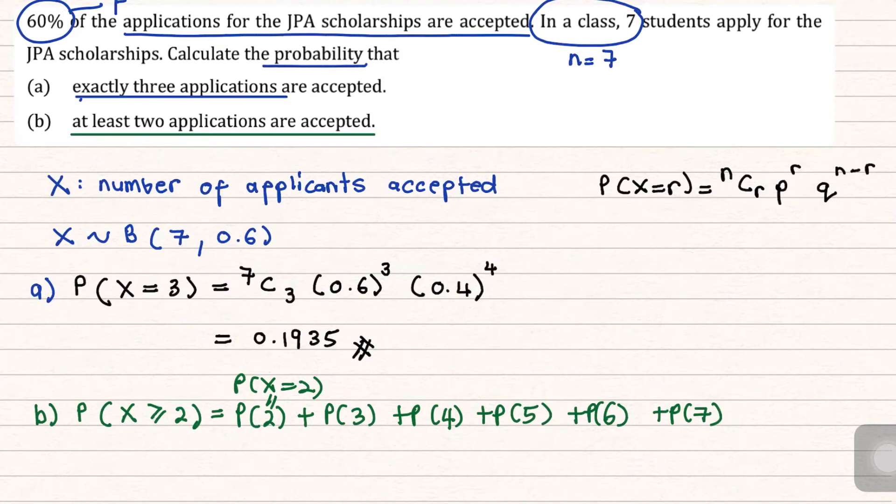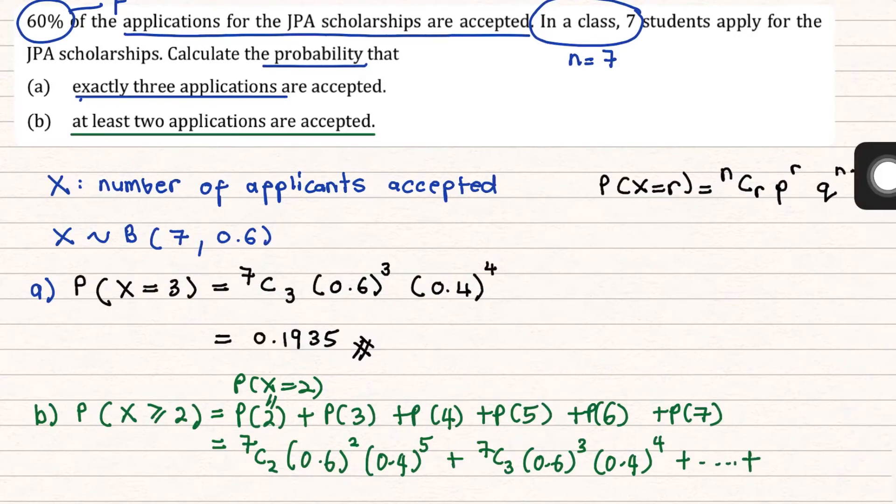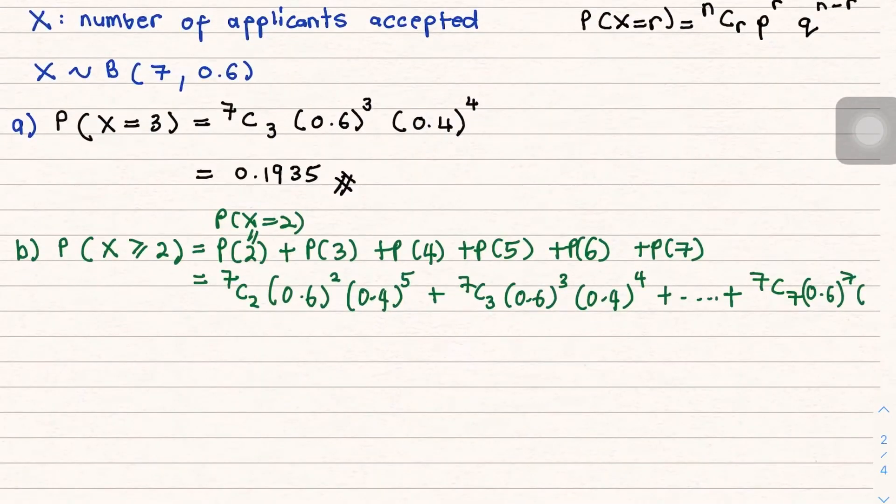Okay, so now, if you look at the equation that you have, you're going to have a lot of formula and calculating to do. For example, if I plug in, 7 choose 2, 0.6 power 2, 0.4 power of 5, plus 7 choose 3, 0.6 power of 3, 0.4 power of 4, and so on. Okay, so it will be quite messy over here.